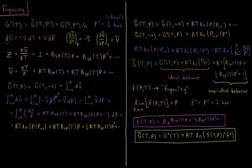From previous videos we saw that our change in Gibbs energy during a small perturbation to the state of the system, dG, is equal to minus entropy times the change in temperature, dT, plus the volume times the change in pressure, dP. We also saw that the Gibbs energy is a function of temperature and pressure — the partial derivative of the molar Gibbs energy with respect to temperature at constant pressure is equal to the negative molar entropy, and the partial derivative with respect to pressure at constant temperature is equal to the molar volume.